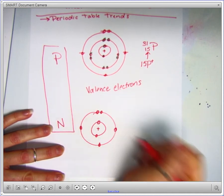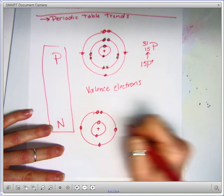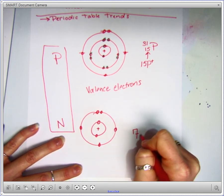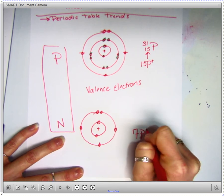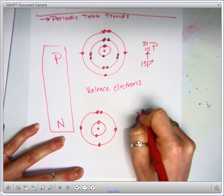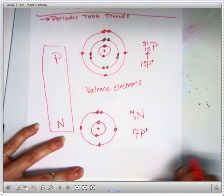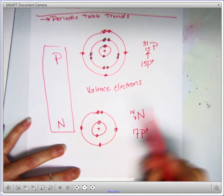All the positive charge in this case for nitrogen is still located in the nucleus, but this time the positive charge would be from seven protons. So nitrogen would be 14, seven, so it has seven protons.